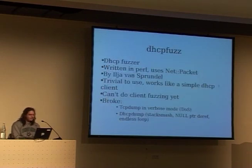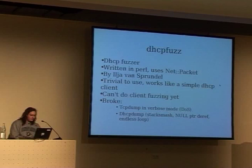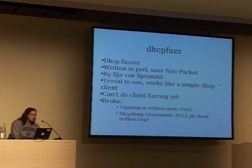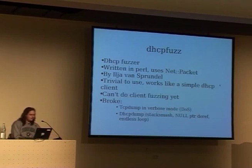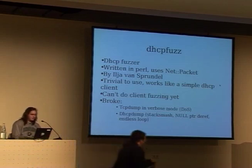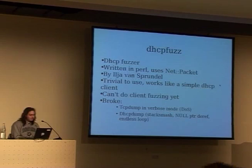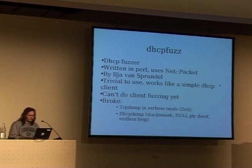Another tool I made is DHCP Fuzz, which sends out very bogus DHCP messages. It broke TCPdump in verbose mode — basically a denial of service. Certain types of packets cause TCPdump to take two or three minutes to parse a single packet. If you send out a lot of those packets, TCPdump will pretty much do nothing. The other tool affected is DHCPdump, which is apparently used a lot by some administrators — it has null pointer references, stack smashes, endless loops, and lots of stuff in there.